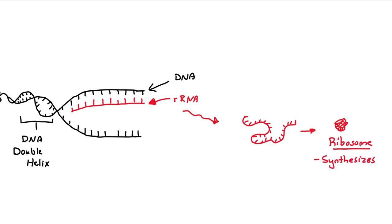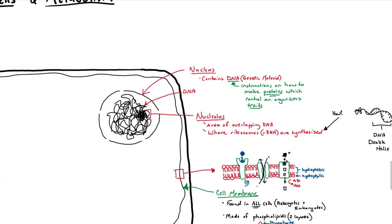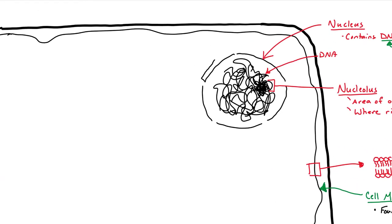Ribosome's purpose in a cell is to synthesize proteins. And they use the DNA instructions, the rest of the DNA instructions, to do so. Again, ribosomes are made of rRNA. No membrane at all.